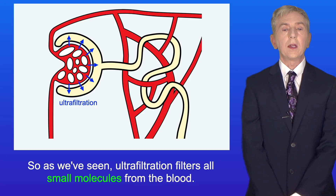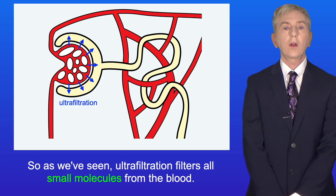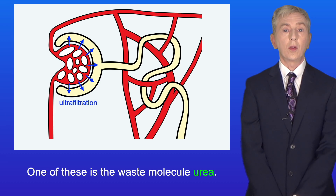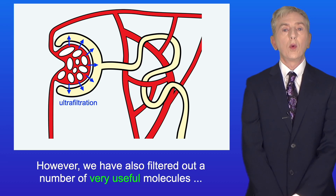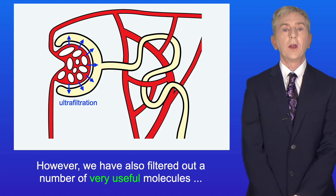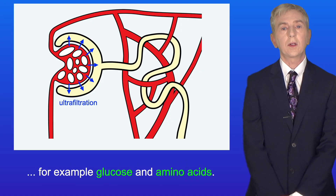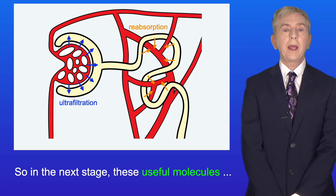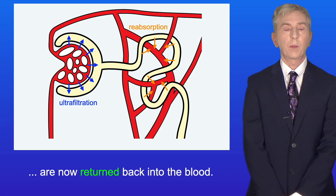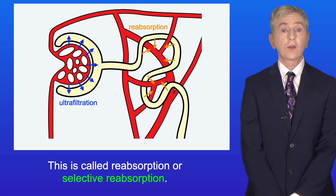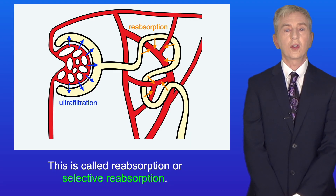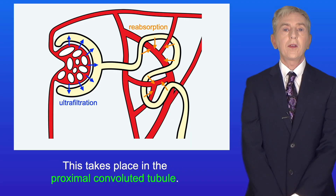So as we've seen, ultrafiltration filters all small molecules from the blood. One of these is the waste molecule urea. However, we've also filtered out a number of very useful molecules, for example glucose and amino acids. So in the next stage these useful molecules are now returned back into the blood. This is called reabsorption or selective reabsorption, and this takes place in the proximal convoluted tubule.